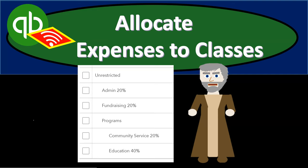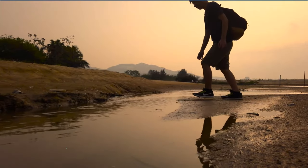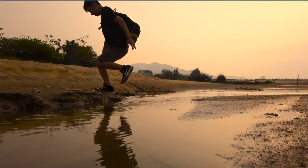In this presentation, we're going to allocate expense amounts to their proper classes. We currently have them classified as unclassified. We're going to assign them to a class, which will assign them to their function or use — what they're going to be used for — which will include admin, fundraising, and the programs of community service and education. Let's get into it with Intuit's QuickBooks Online.